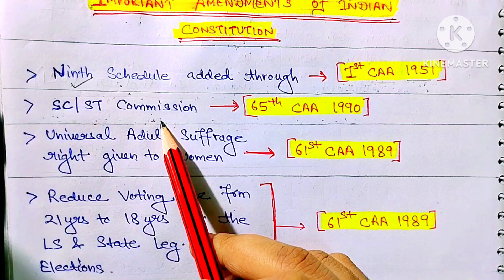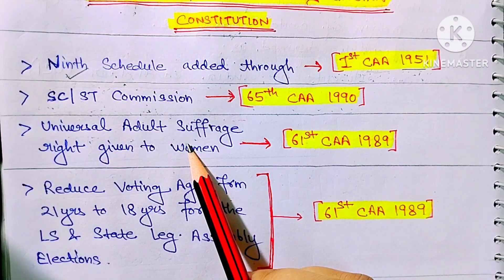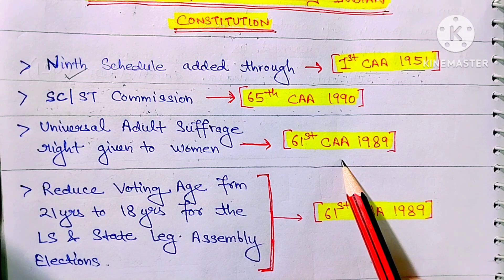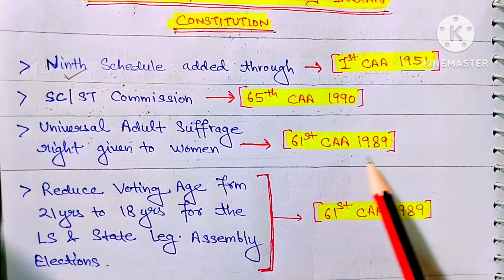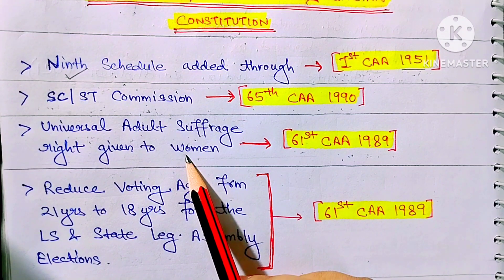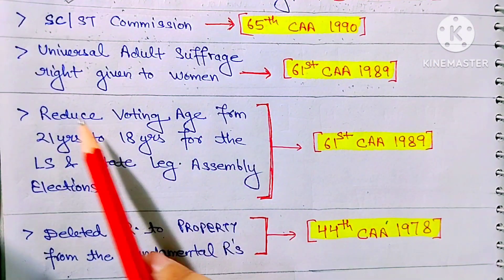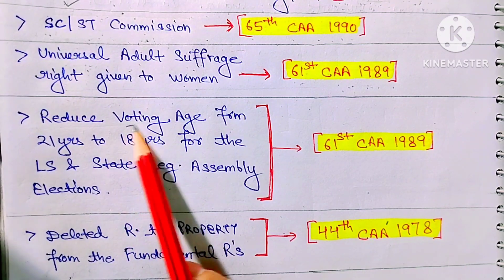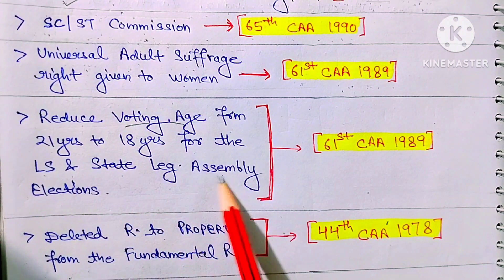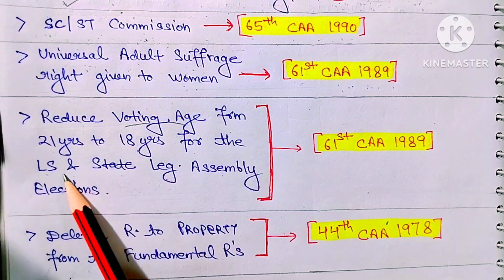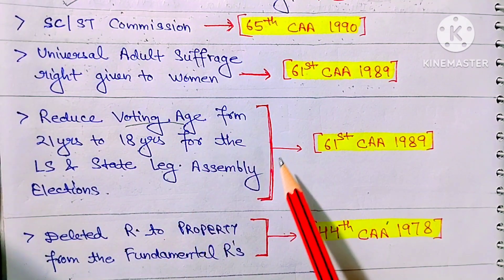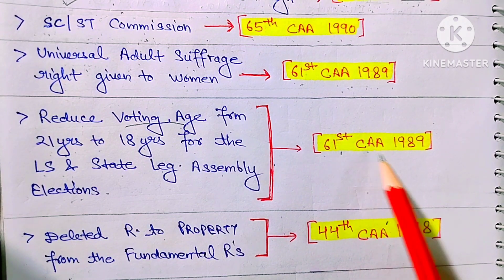After that — Universal Adult Suffrage. This right was given to women through the 61st Amendment Act 1989. Also, the voting age was reduced from 21 to 18 years for Lok Sabha and State Legislative Assembly elections. This reduction was also carried out through the 61st Amendment Act 1989.